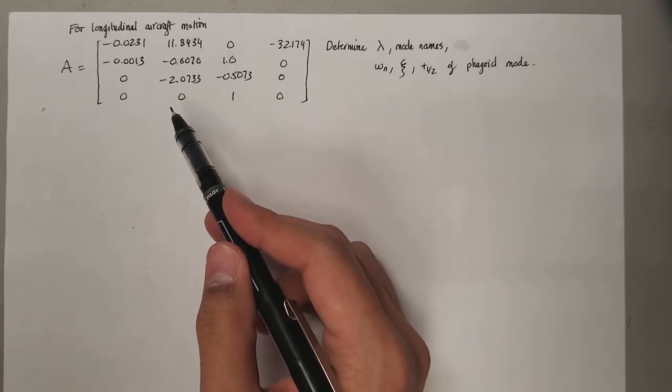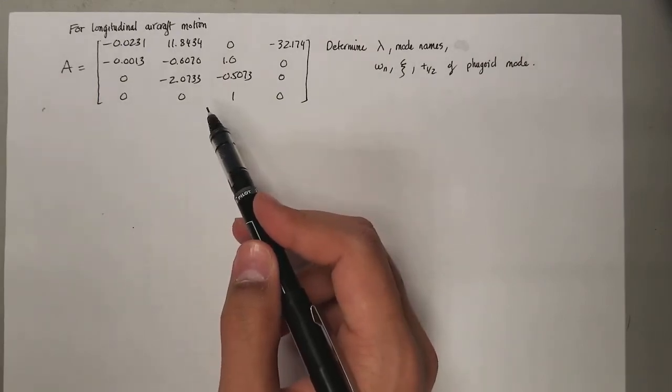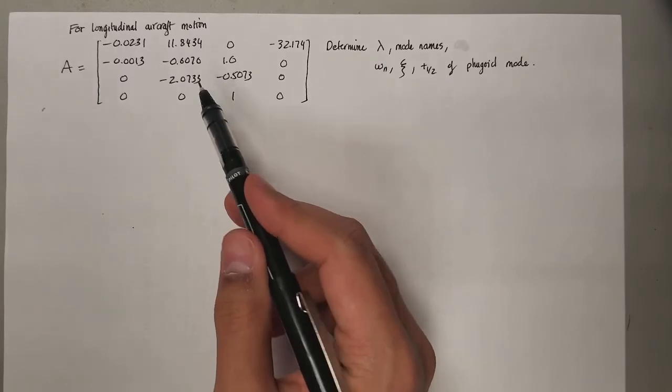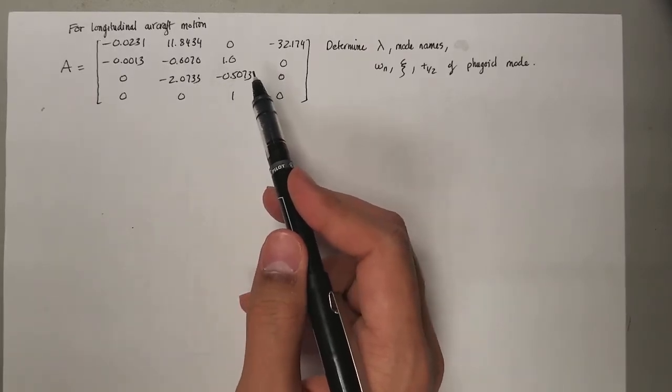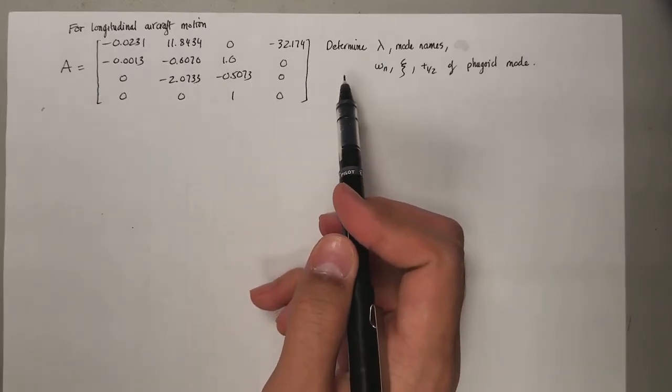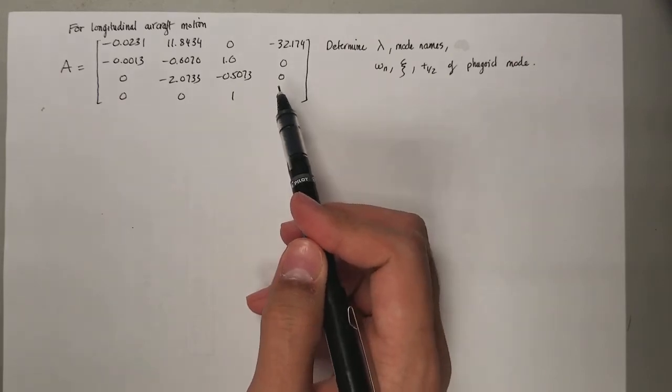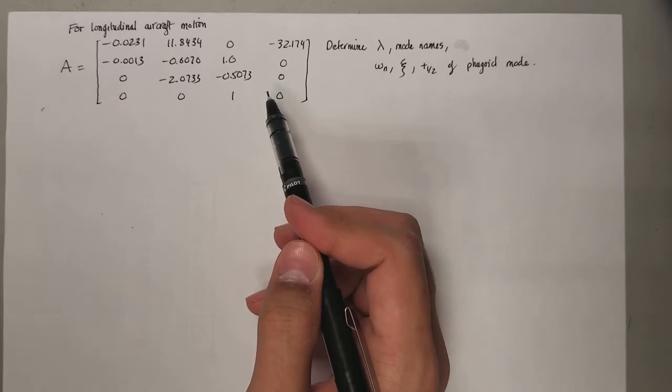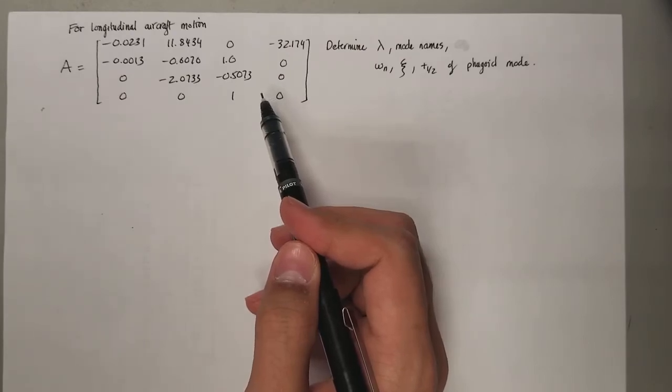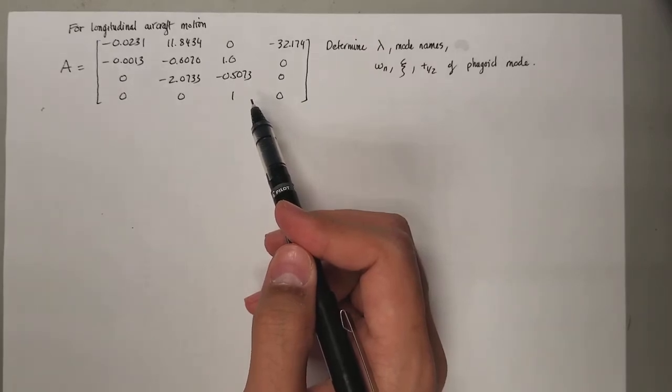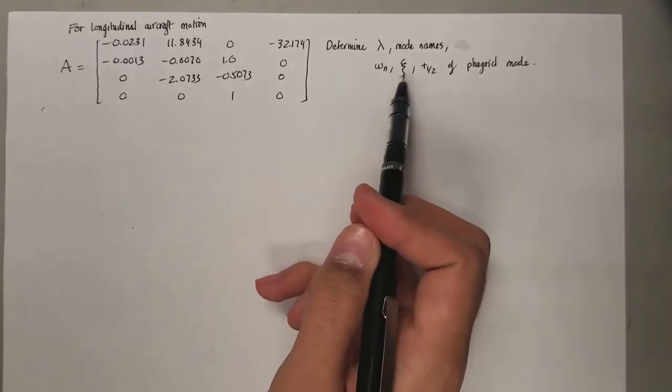In this particular problem, you are given a matrix that describes the longitudinal aircraft motion and you are asked to determine the eigenvalues of that matrix and name the modes to the appropriate eigenvalues.